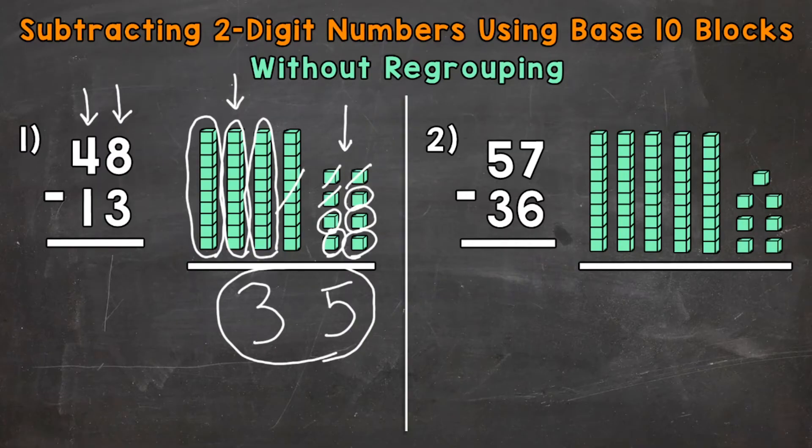Let's go to the left to the original problem and subtract there as well to see if we still get 35. Again we start with the ones. 8 minus 3 gives us 5. And then as far as the tens, 4 minus 1 gives us 3. So we have 35 over there as well.